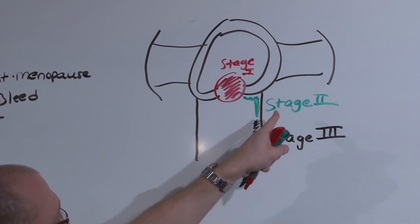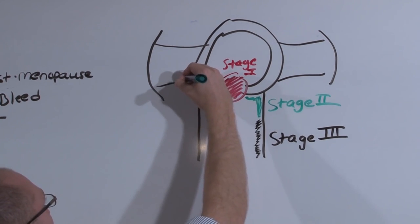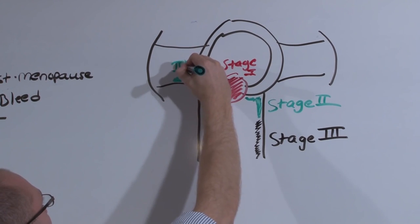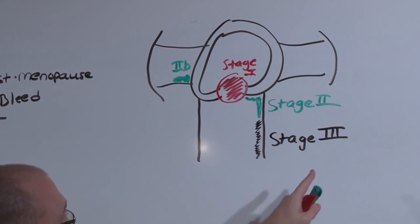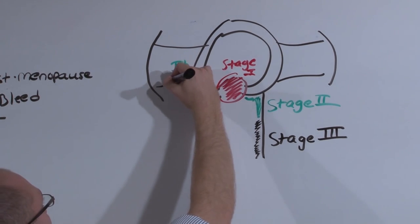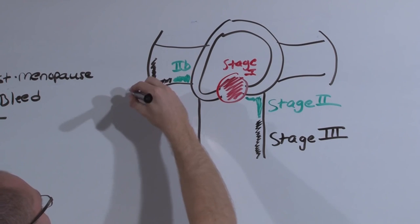To go from stage 2A to 2B, there needs to be extension along the cardinal ligament towards the pelvic sidewall. To go from 3A to 3B, it must involve the pelvic sidewall.